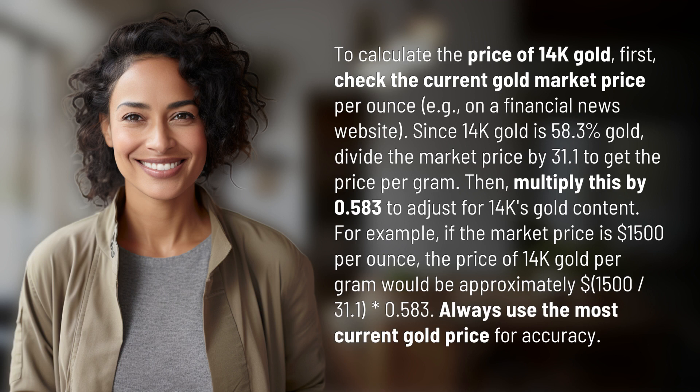For example, if the market price is $1,500 per ounce, the price of 14k gold per gram would be approximately: 1500 ÷ 31.1 × 0.583. Always use the most current gold price for accuracy.